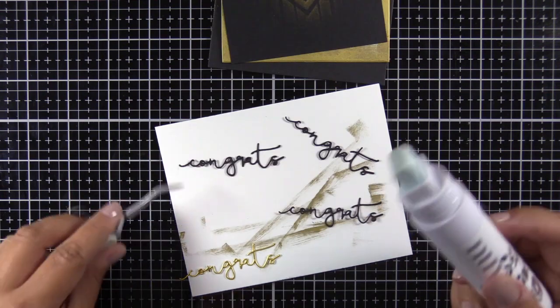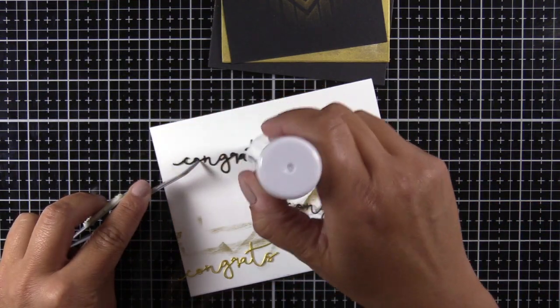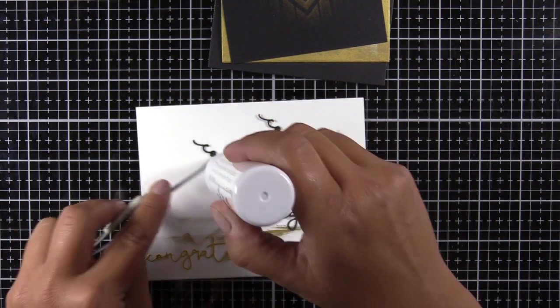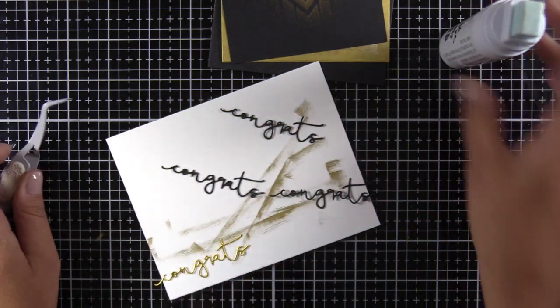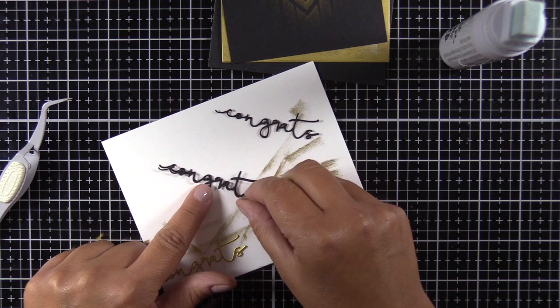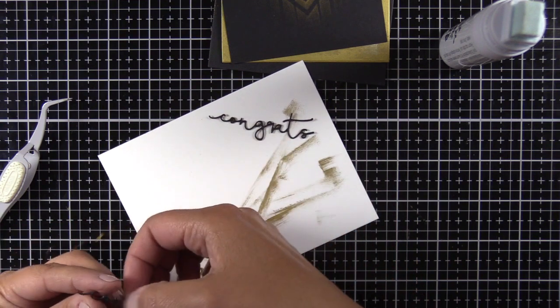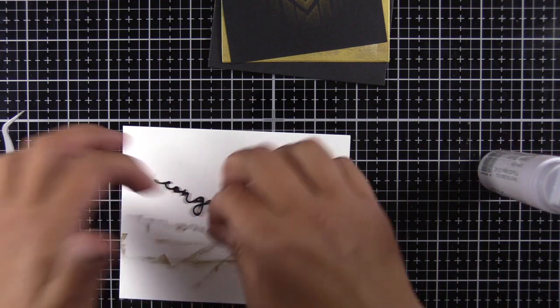Time for the sentiment. I've die cut three black pieces of cardstock with the signature words congrats die. I never remember to put adhesive on the back of these little bitty die cuts, and then when I do I find that it's really hard to actually die cut. The adhesive is too thick.